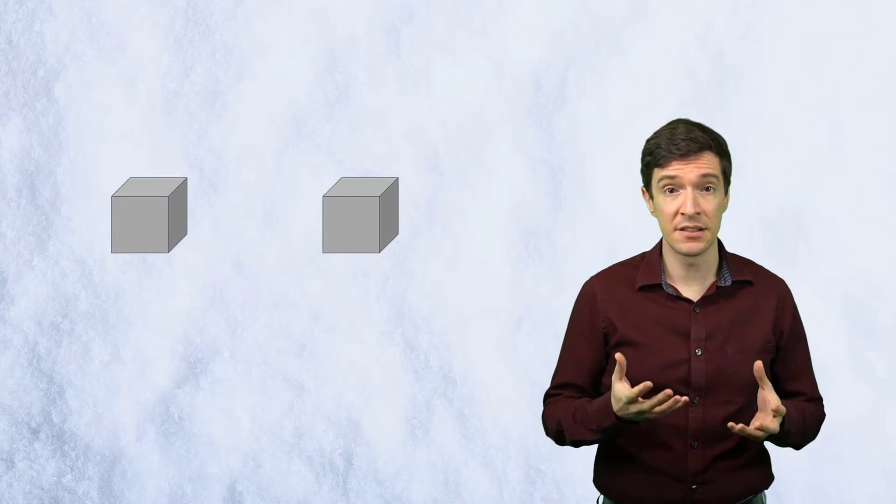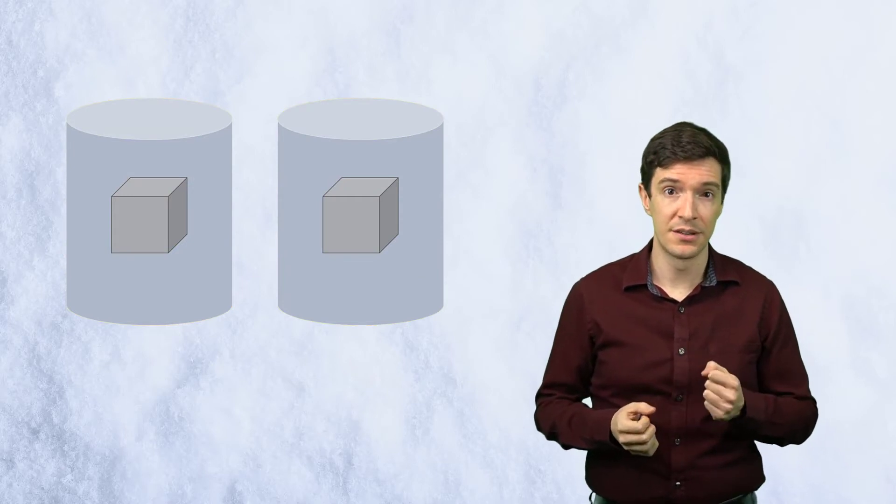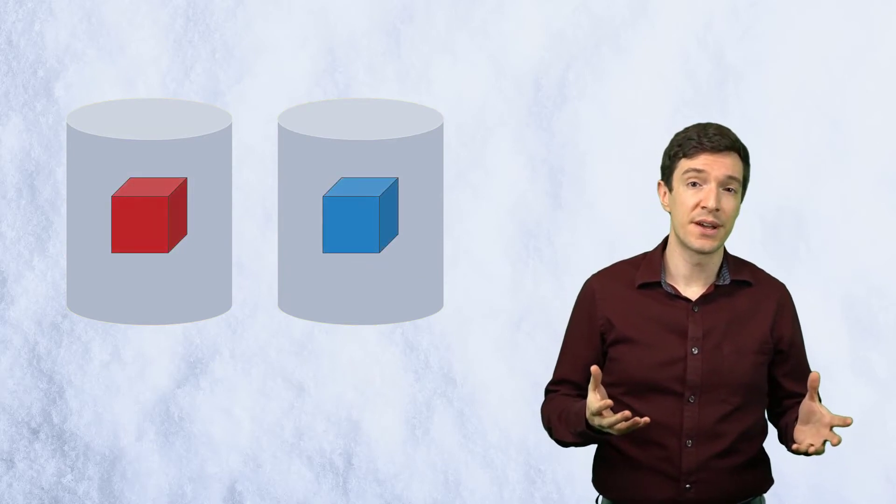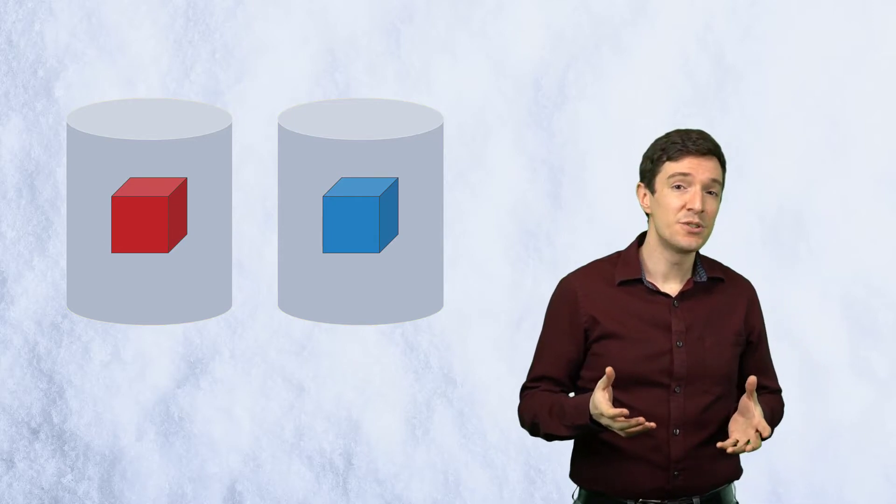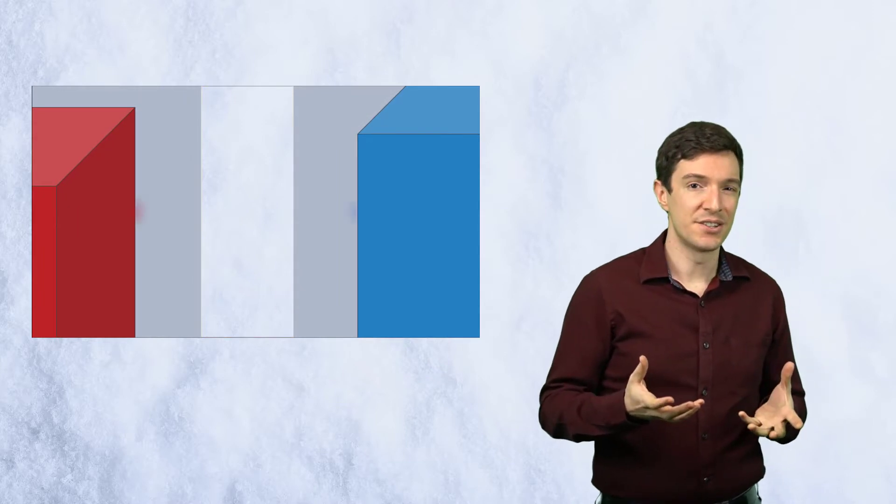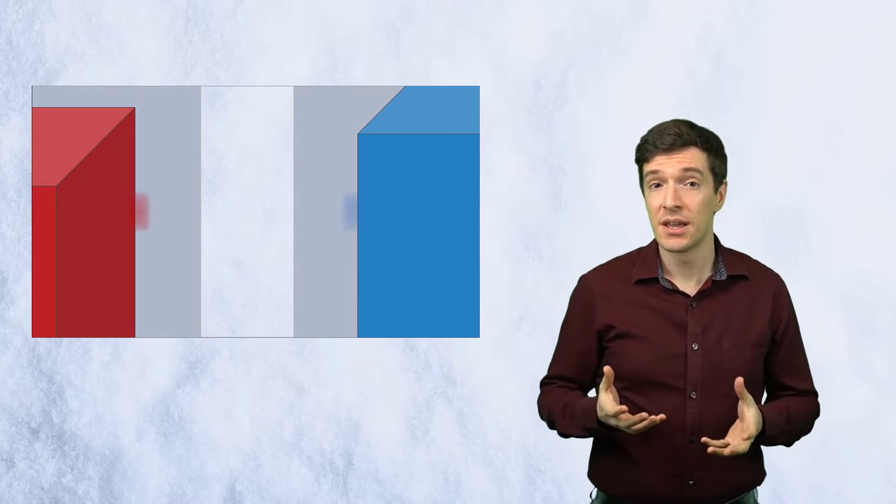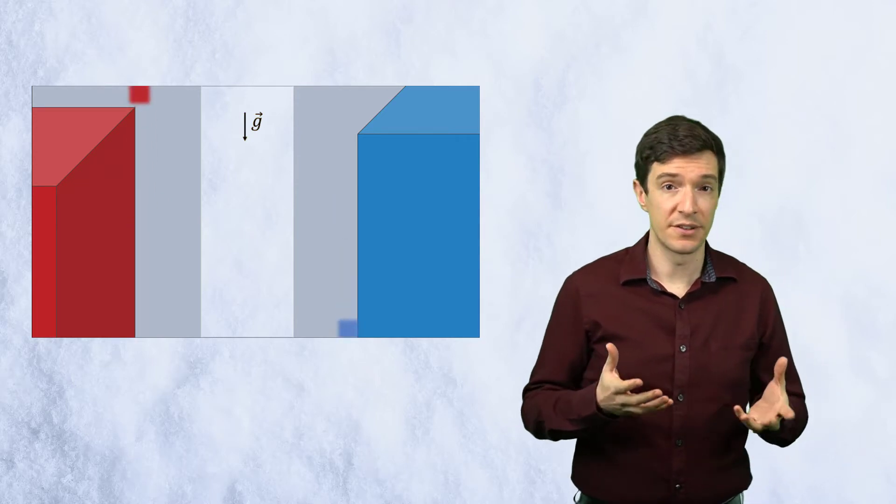Let's start by defining what is external natural convection. When a system surrounded by a still fluid is at a different temperature than the fluid, external natural convection occurs. The fluid near the object heats up or cools down, its density changes, and the buoyant force makes the fluid parcels move along the gravitational field direction.